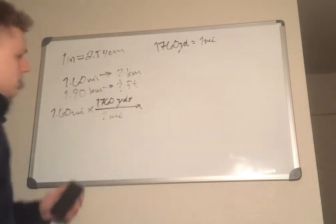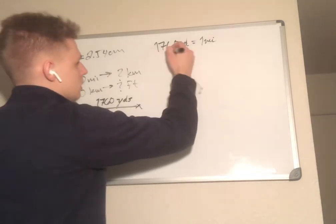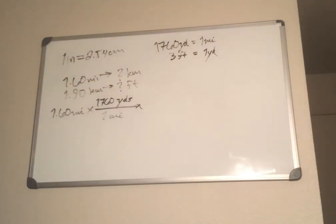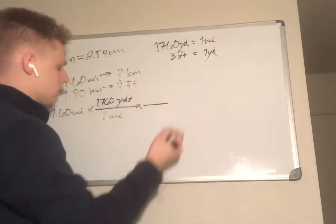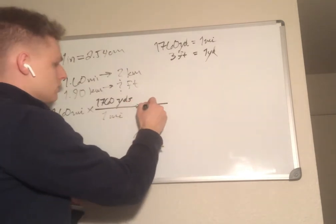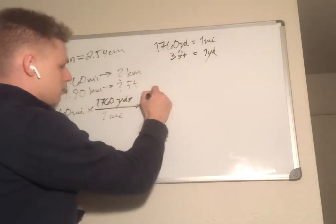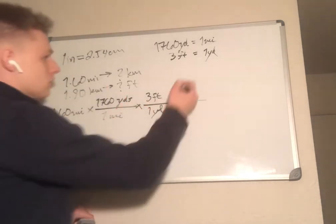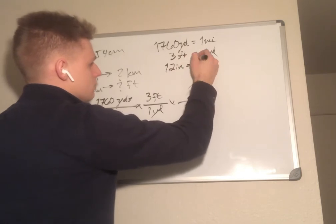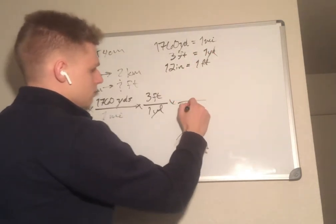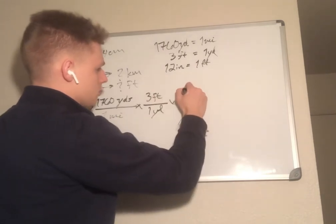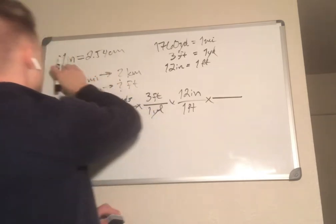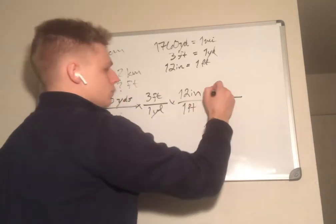How many feet are in a yard? Three feet equals one yard — everyone in American public education probably knows that. So we put one yard on the bottom to cancel, and 3 feet on top. Then to get to inches: 12 inches in one foot, so one foot goes on the bottom to cancel with the 12 inches on top.